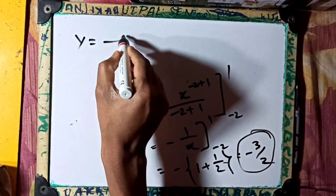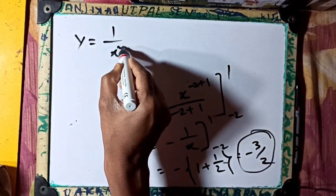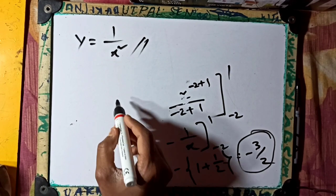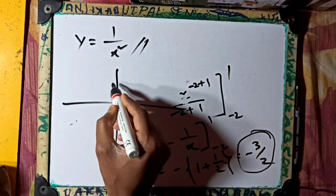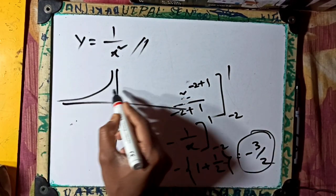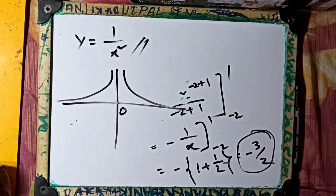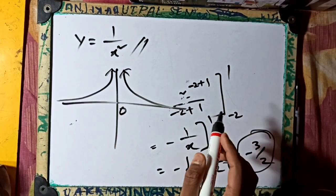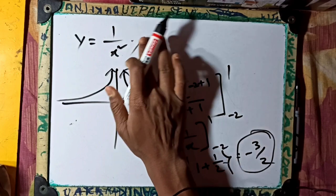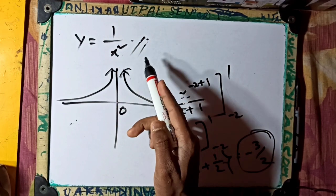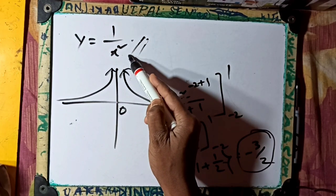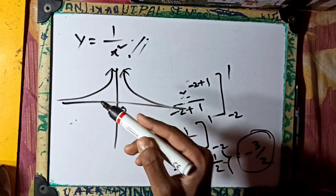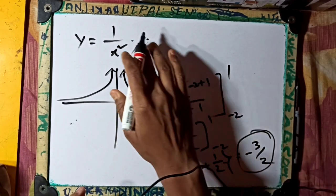Now we will see which variable to use. We have y equal to 1 by x, which gives us the equation. We consider the function at x equal to 2 and try to apply the equation transformation.